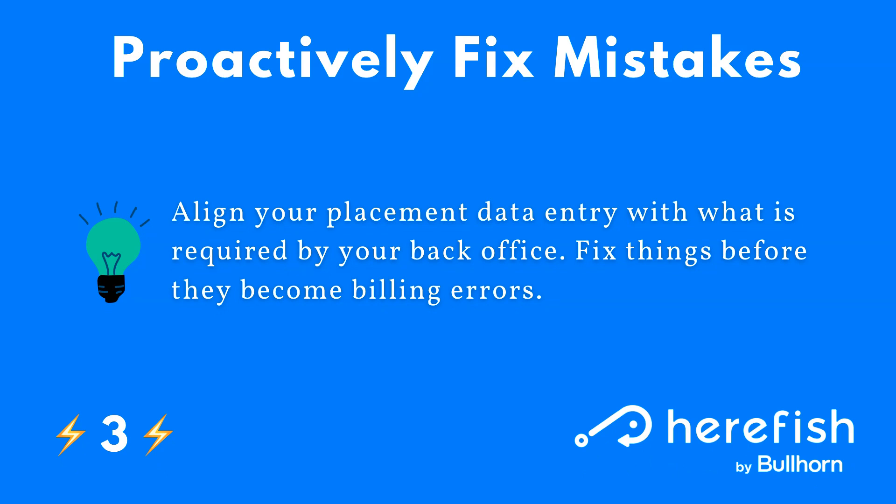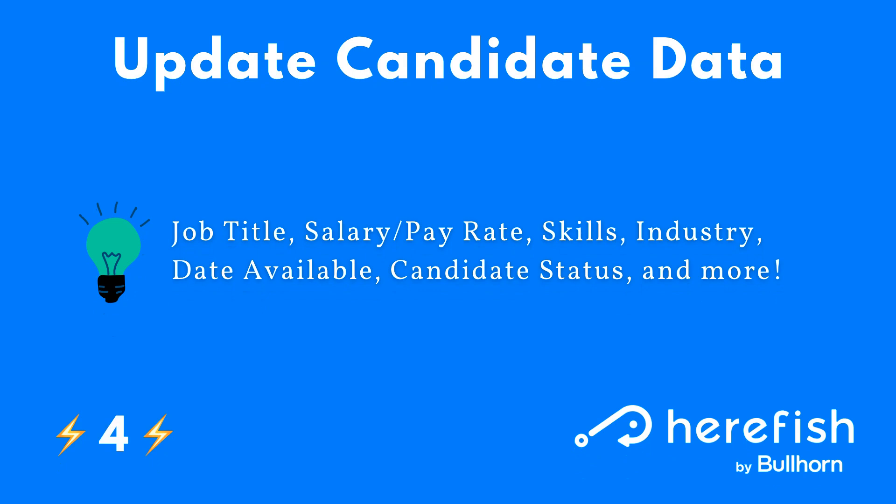Number three is identifying potential mistakes and fixing them proactively. Your back office will love you if you put this type of automation and campaign together. Make sure your placement data is aligning with what's required by your back office so you can fix problems before they become billing mistakes. This saves heartache and headache, and provides a smoother experience not only externally for your candidates and clients, but for your internal teams as well.